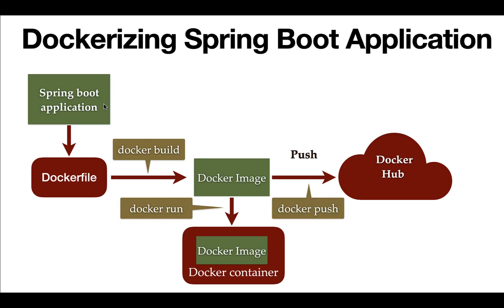Let's understand this with an example. Consider we want to dockerize a Spring Boot application. We need to create a Dockerfile and define all the instructions or commands to build the Docker image. Once the Dockerfile is ready, we use the docker build command to build the Docker image — an executable package. Then we use the docker run command to run this Docker image in a container, which is a running instance of the Docker image. This complete process is called dockerization.